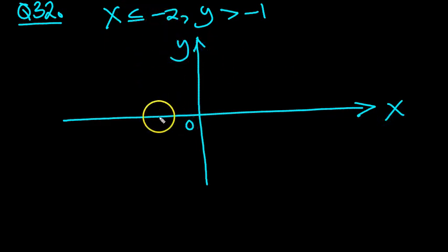X is less than or equal to minus 2. Well, minus 2 is here, less than or equal. So to the left that would be, so we'll need to do a solid line because it's less than or equal. So there's minus 2, which I'll just put like so.